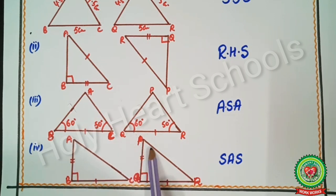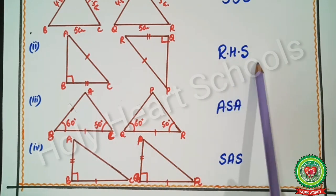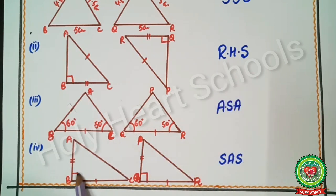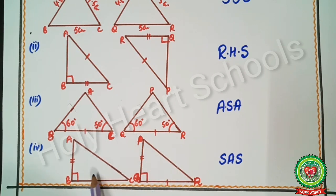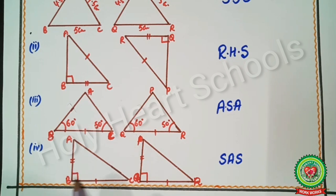In the fourth example, we again have right-angled triangles, but we cannot apply RHS because the hypotenuse is not given. Instead: AB = PQ (side), angle B = angle Q (angle), and BC = QR (side). We have side, angle, side — so we apply the SAS test, not RHS.